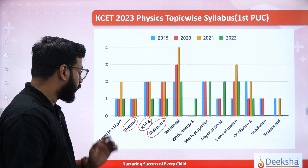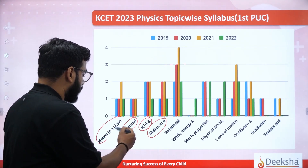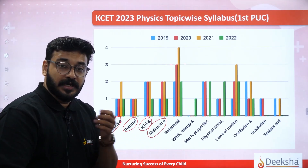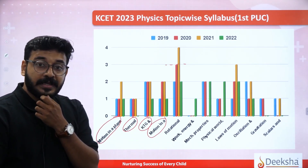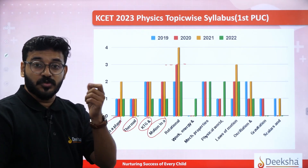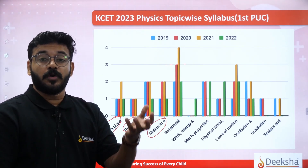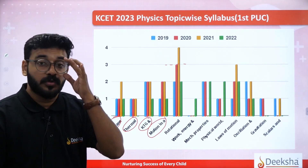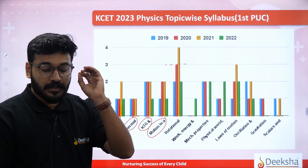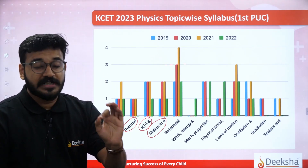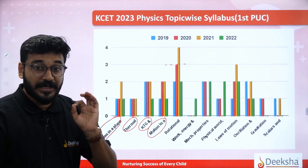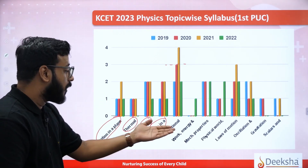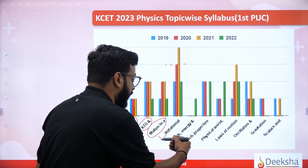Motion in a plane is also very much important, as is motion in a straight line. Velocity, equations of motion — it's very easy, but don't be overconfident, because there is a big chance of losing marks. Please focus a little on these chapters. Be confident — that is the main point. All confidence levels should be higher. Rotational motion and work energy are very important.